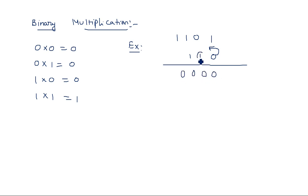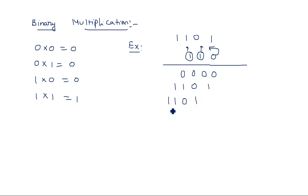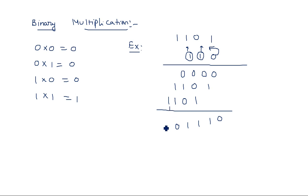Again multiply the top number 1 1 0 1 by the next 1, shifted two positions. Now add all partial products using binary addition: 0 plus 1 is 1, 0 plus 0 plus 1 is 1, 0 plus 1 plus 0 is 1, then 1 plus 0 gives 0 with carry 1, and 1 plus 1 gives 1 0. This is the final result.